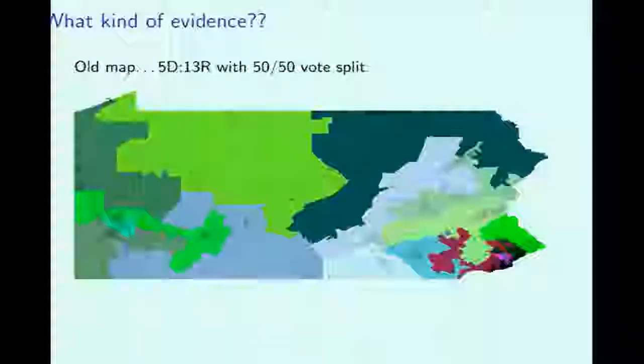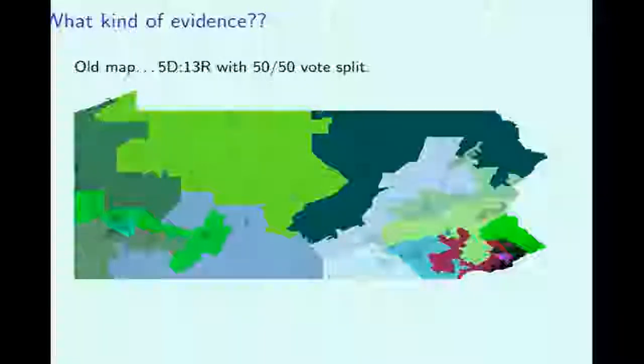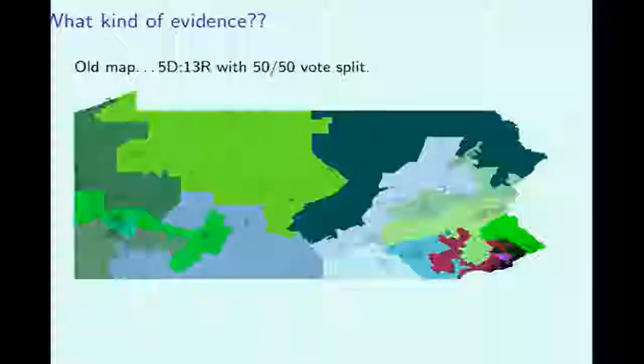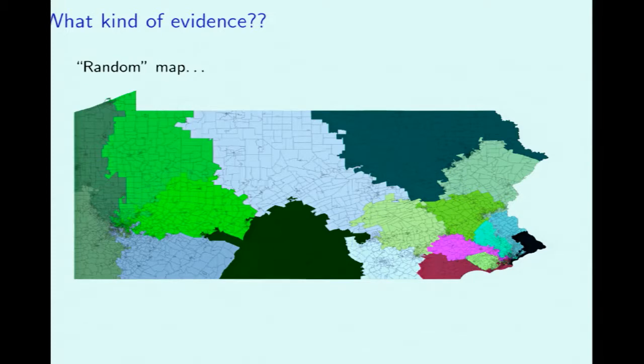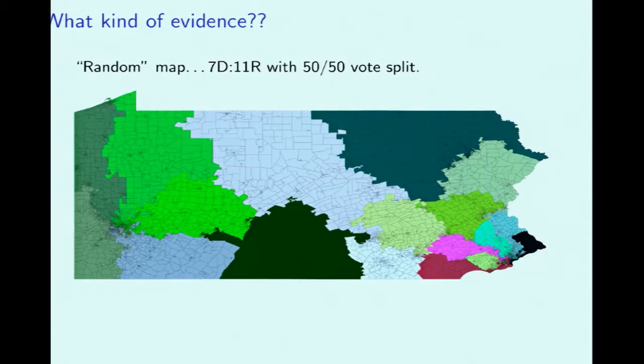There's a subtle thing that's wrong with this. The current legal framework under which people are suing states for gerrymandered districtings is that we should throw out a districting if it was intentionally drawn to advantage one party. If the map favors Republicans just by accident — because that happens naturally with the geography of Pennsylvania — the current lawsuits wouldn't necessarily argue we should throw that out. So consider a random map of Pennsylvania drawn by a computer: with a 50-50 vote split, it's still not 9-9 — it's 7-11, with Republicans still doing better.